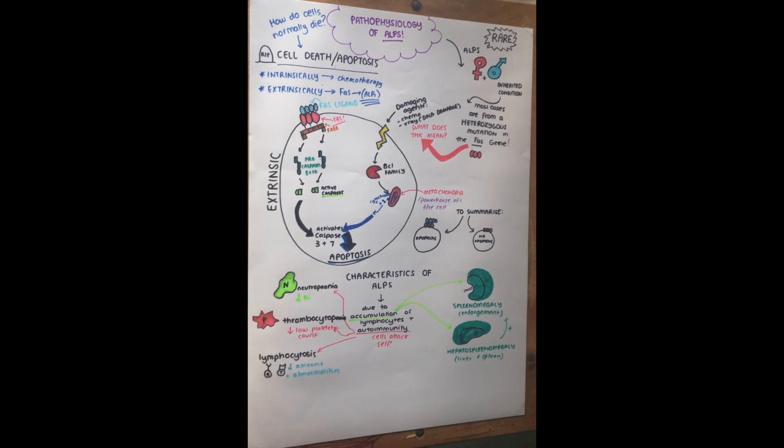And then there's also this thing found called DNTs, and they're double negative T cells. So I won't go into it too much because it's really hard to understand, but they're just a form of T cells, and they just don't have specific receptors to carry out their functions.